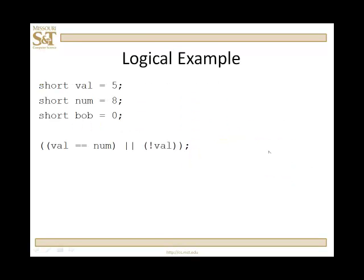As an example, if we again have val, num, and bob, 5, 8, and 0 all typed short, then is val equal to num? Val is 5, num is 8. Is val equal to num? No, that's false. Val is 5. What is that? That's true.